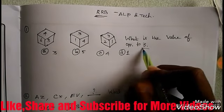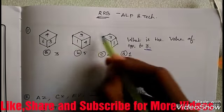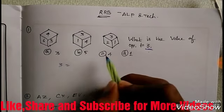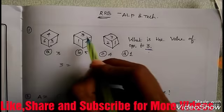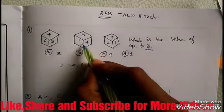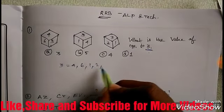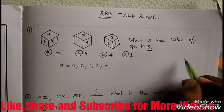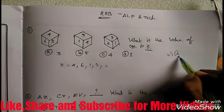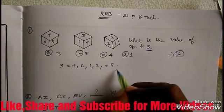What is the value of opposite to 3? Dice has 6 sides. 3, 4, 5... there are 5 numbers. Remaining number 5.